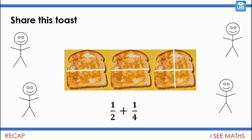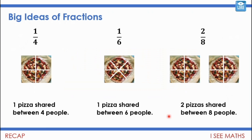Or we could share the first two pieces, split them in half, so we each have half of one of those two pieces, and then that last one into quarters. A half and a quarter — well, that's three quarters. Then we moved on to the big ideas of fractions: a quarter is actually more than a sixth, even though four is less than six, because we're splitting one into four pieces. And we also saw that a quarter and two eighths are equivalent — because two pizzas shared between eight people means each person gets one quarter, the same as one pizza shared between four.